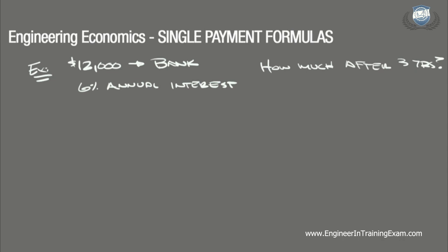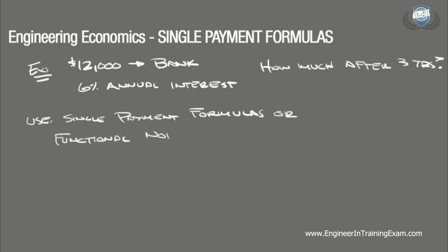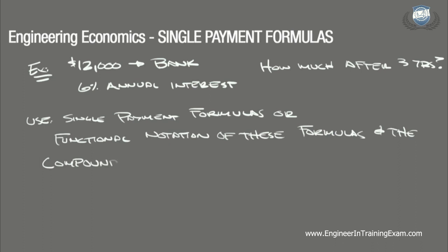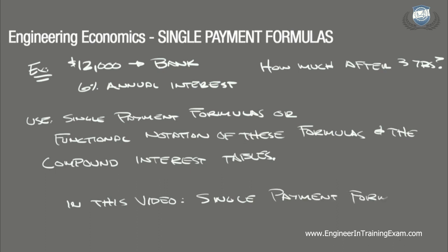As established earlier, this can be determined in one of two ways: either by using the single payment compound amount formula found in the table on page 114 of the NCEES Supplied Reference Handbook, or by using that formula written in functional notation and referencing the compound interest tables starting on page 116. In this video, we will solve it using the single payment compound amount formula.